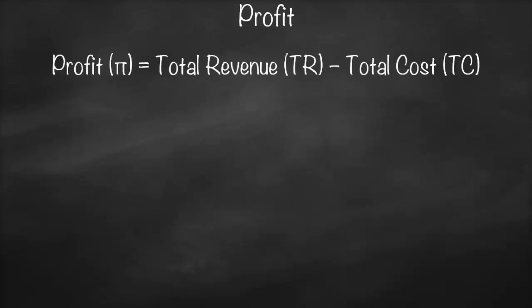How do you measure profit? Profit is calculated as total revenue minus total cost. How do you calculate total revenue? Total revenue is price times quantity.